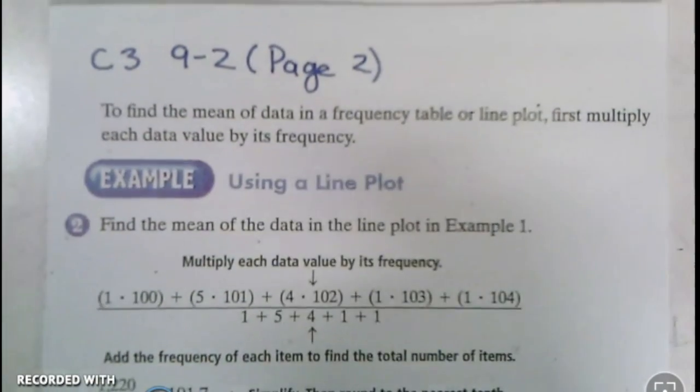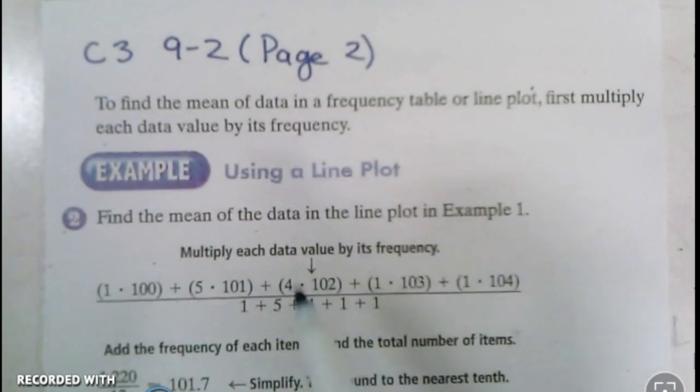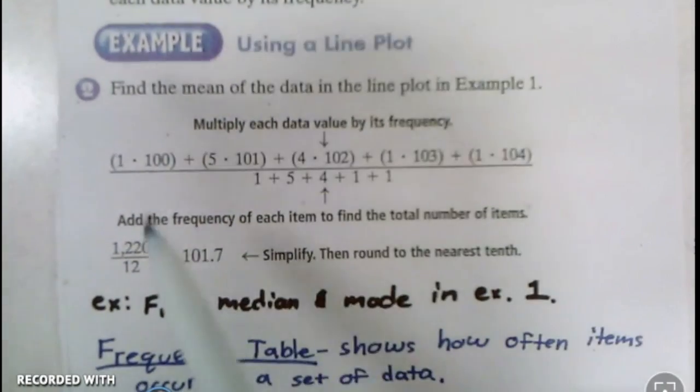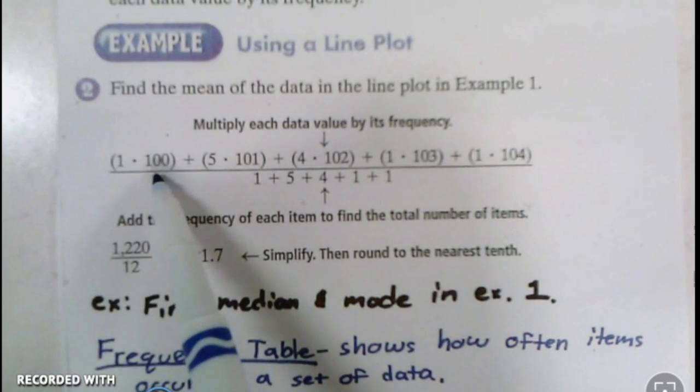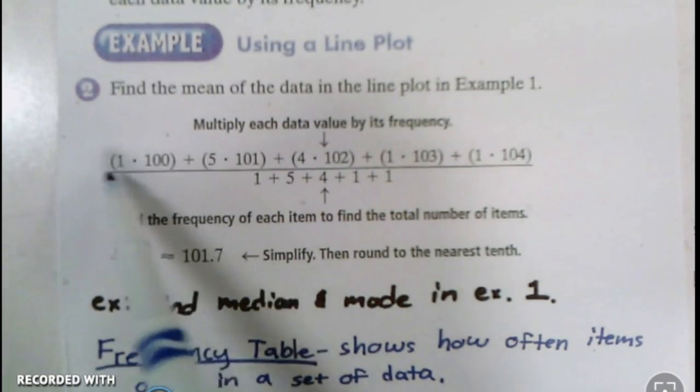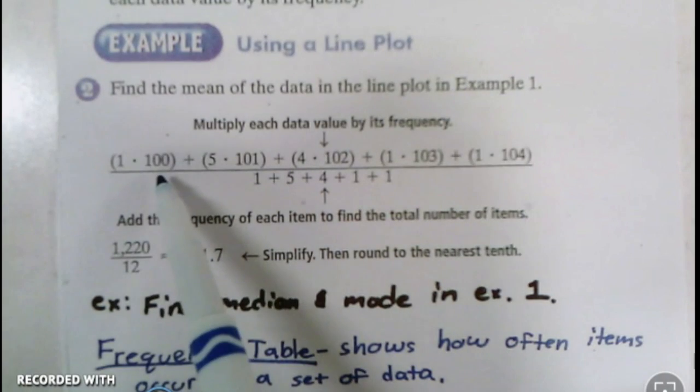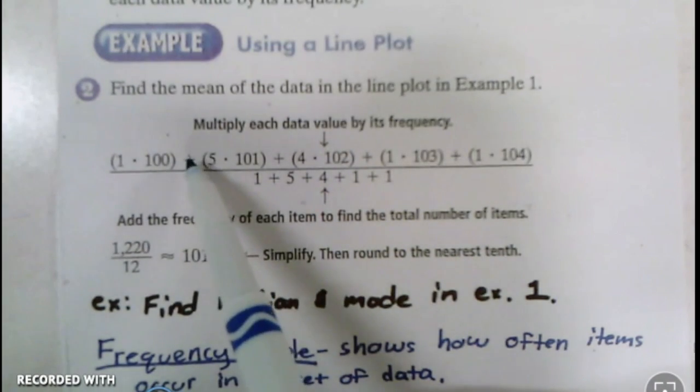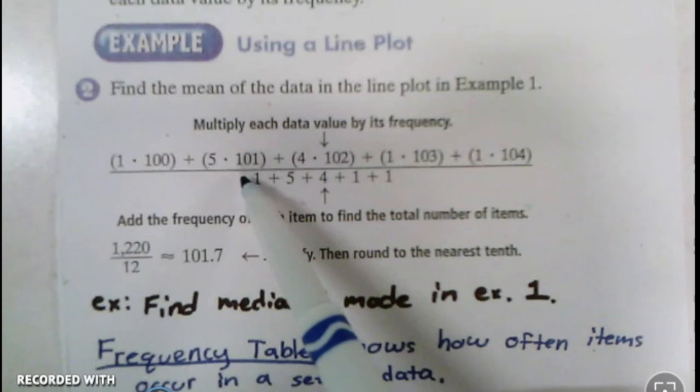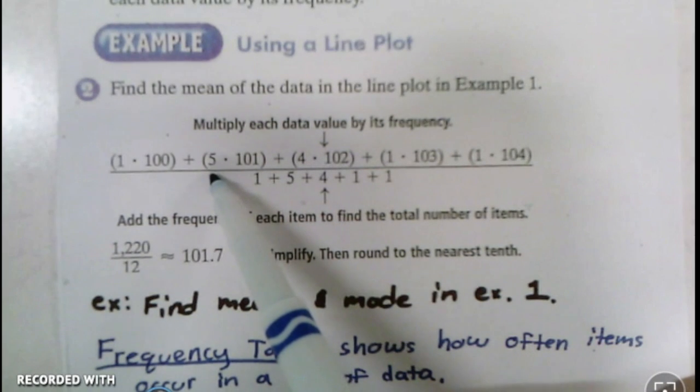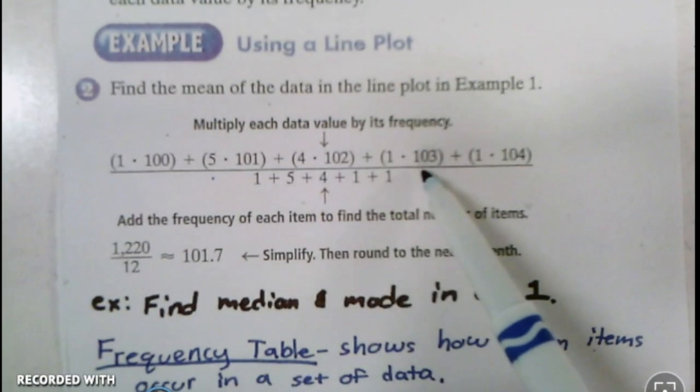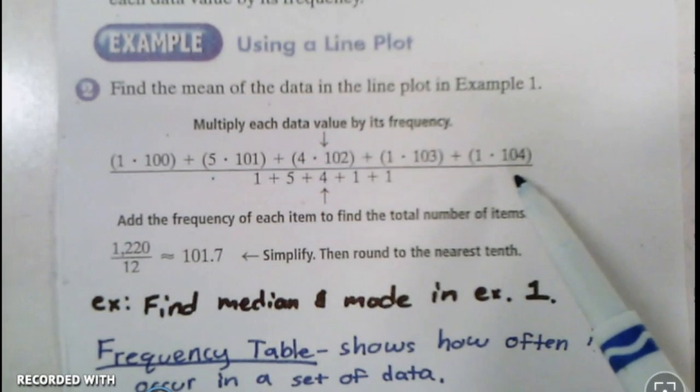To find the mean of the data using a line plot, you're going to multiply every time that 100 happens. So however many x's were above 100, you'll multiply it by that number. In our last data set, there was only one x above 100, so we multiply one times 100. Then we're going to add that to how many times did 101 occur? Five times. So we'll multiply it times five. 102 happened four times, 103 was one time, 104 was one time.